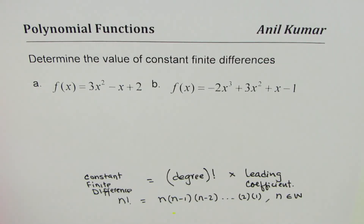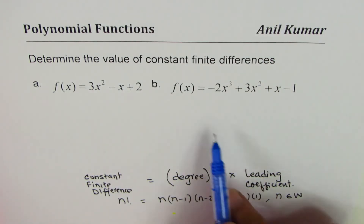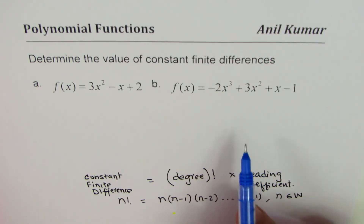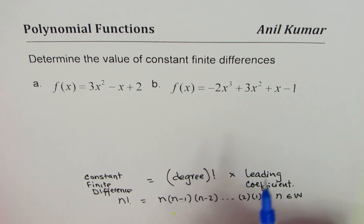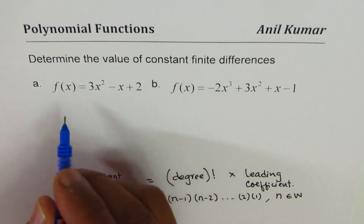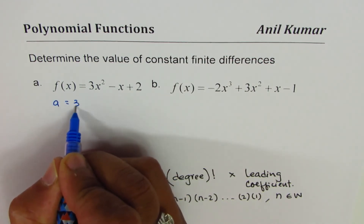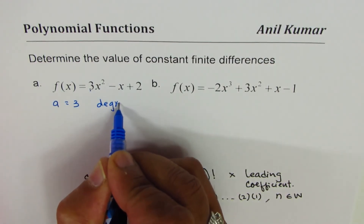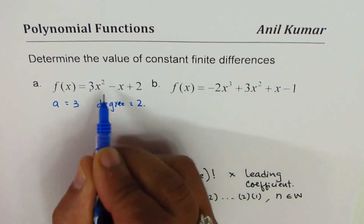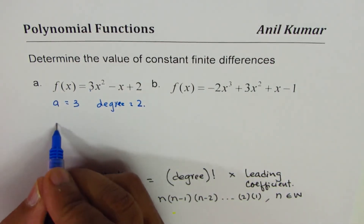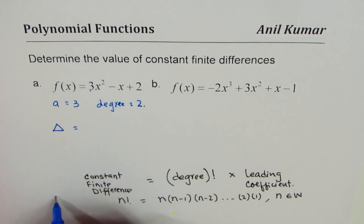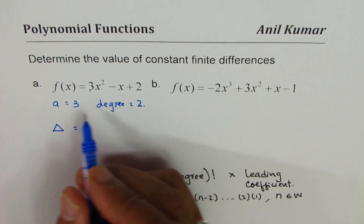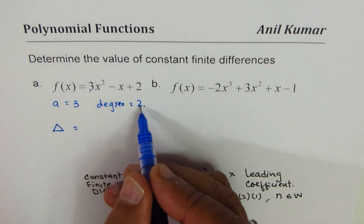Now you know the formula — pause the video, answer the question, and then check with my solution to verify. For the first one, Part A, the leading coefficient is 3 and the degree is 2. Therefore the constant difference is 2! times 3.